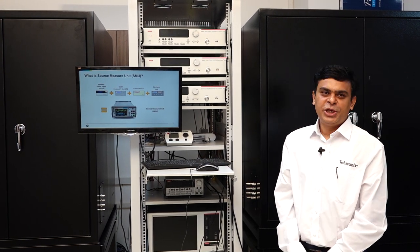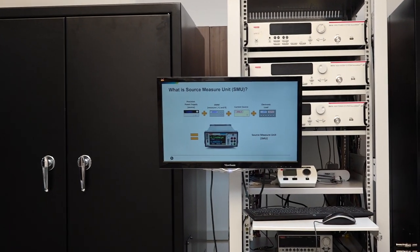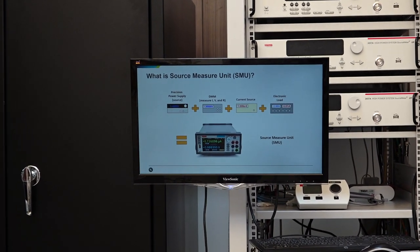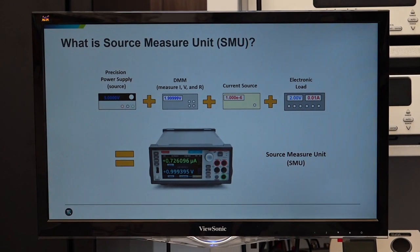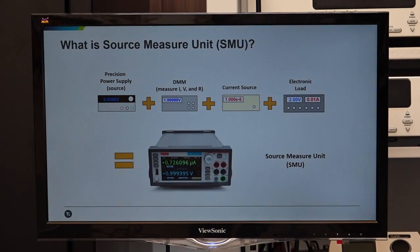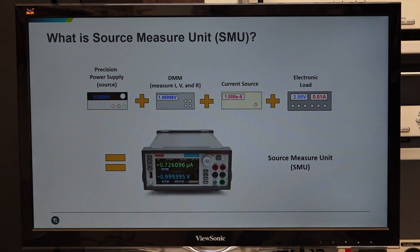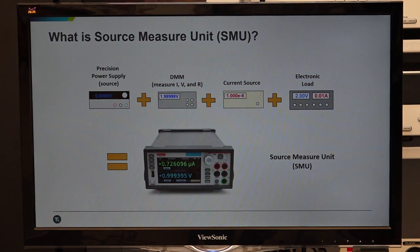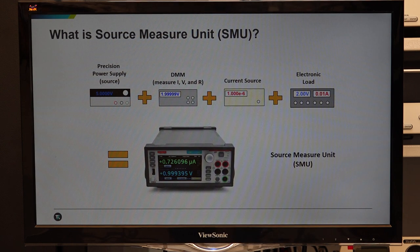What is a source measure unit or SMU? SMU is an integrated instrument having the feature of a high precision voltage source, high precision and accurate current source, along with DC multimeter capabilities for measurement of voltage, current, and resistance. SMU also has a DC resistive electronic load for sinking applications. One SMU means a combination of DC electronic load, current source, DMM, and power supply.